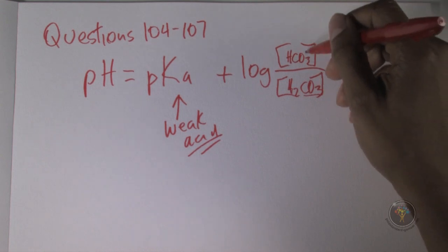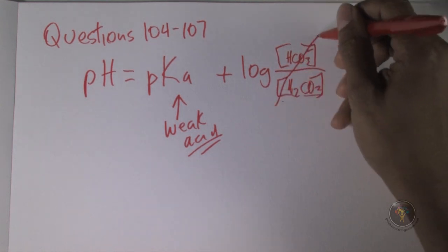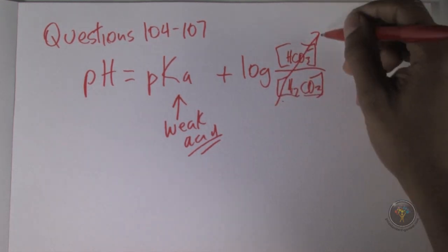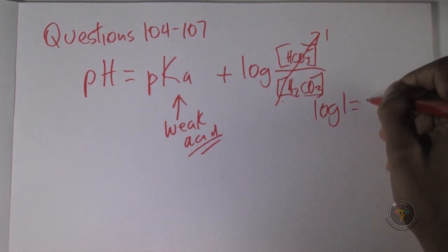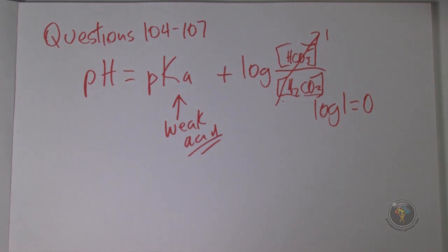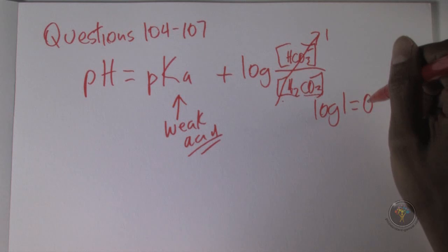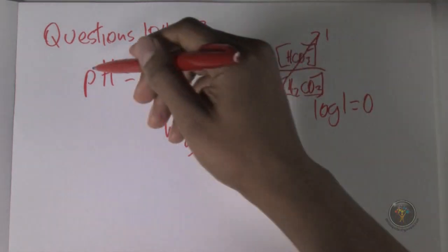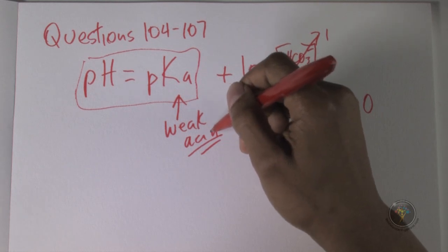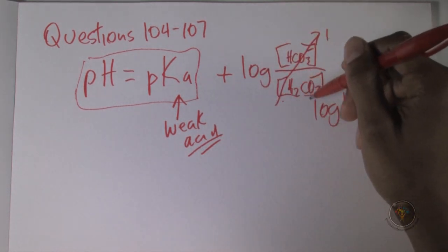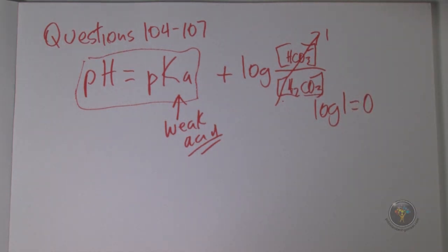But the concentrations of each is the same, so if the concentrations of each is the same, then this number is 1, and the log of 1 is 0. Have you done enough log rules for today? So here, the log of 1 is 0, so then we end up just getting pH is equal to pKa of the weak acid, and the weak acid is the protonated form, the dihydrogen carbonate, so 104, the answer is A.